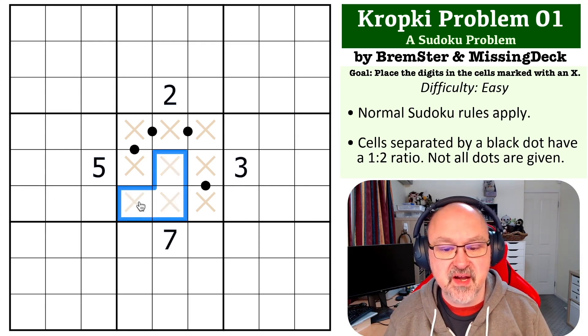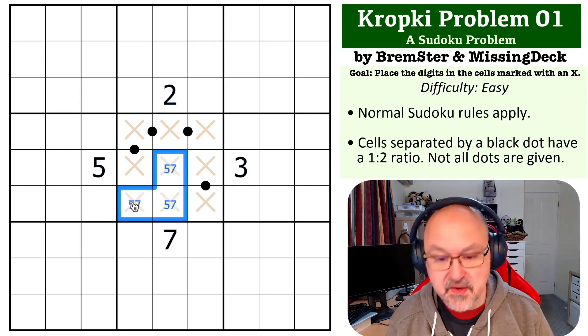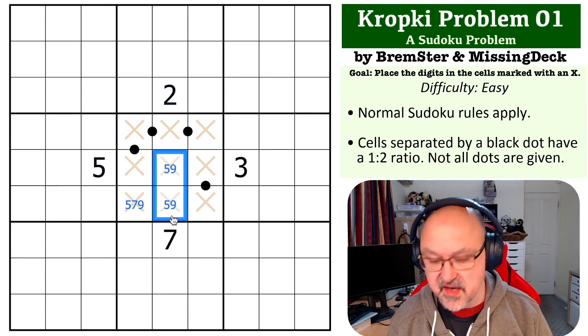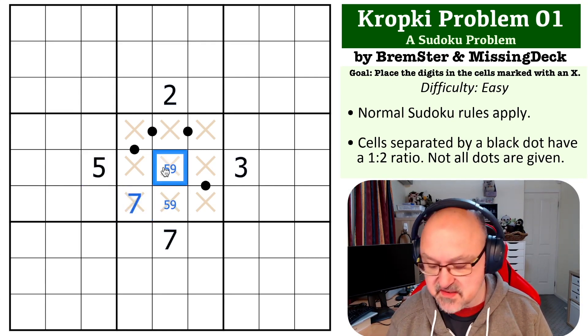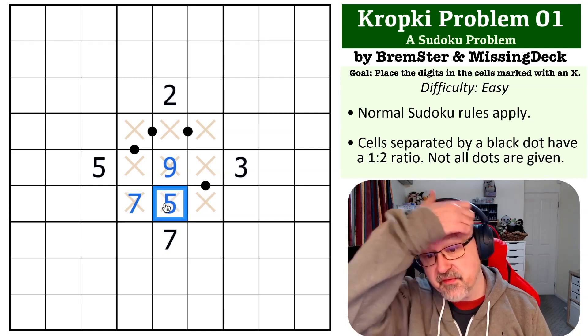So five, seven, and nine have to go into these three cells. Seven cannot go into those cells, so this becomes a seven. This is a five, so this becomes nine and this becomes five.